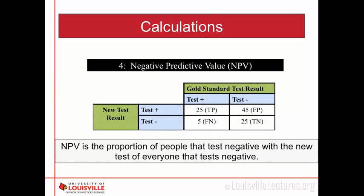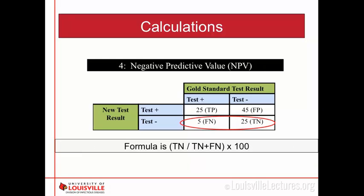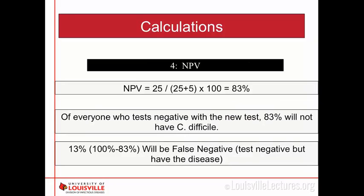Negative predictive value is the proportion of people who test negative with the new test who truly don't have the disease. The formula is true negatives divided by true negatives plus false negatives, times 100. Using our numbers, we get a negative predictive value of 83%. Of everyone who tested negative with the new test, 83% will not have C. diff, and only 17% will be false negatives — people who tested negative but actually have the disease.